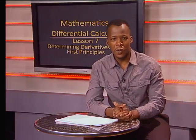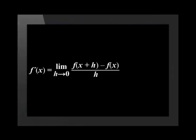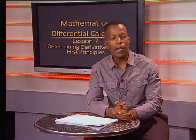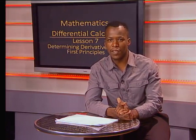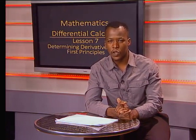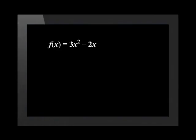To start answering this question, we will use the first principle formula, which reads f dash of x is equal to the limit as h tends to 0 of f of x plus h minus f of x divided by h. Now we need to substitute the values of f of x and f of x plus h in the derivative formula. To do this, we first need to determine what these values are. We know that f of x is the function that was given to us. Therefore, f of x is equal to 3x squared minus 2x.